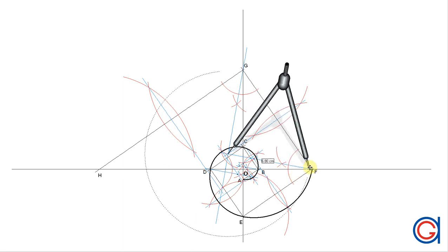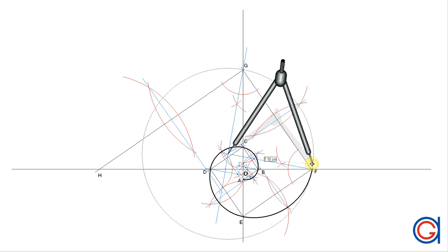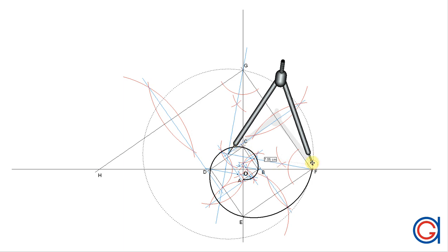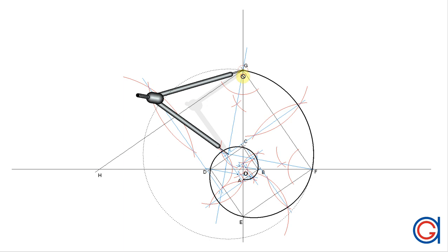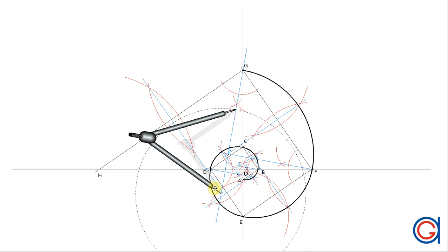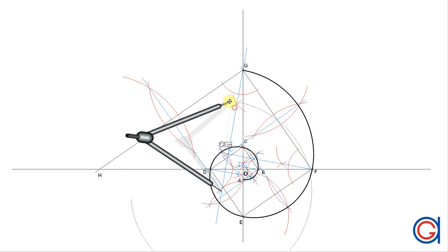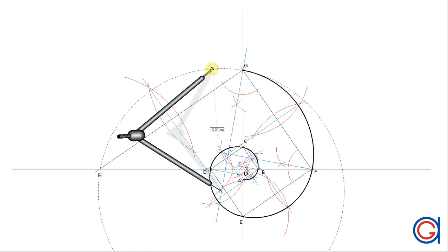Setting the compass on point 6 and radius 6F, we scribe an arc until it cuts point G, as can be seen here. And finally, setting our compass on point 7 and radius 7G, we scribe an arc until it cuts point H.